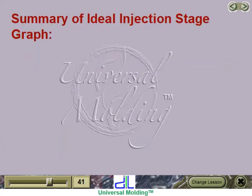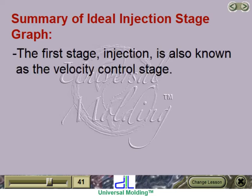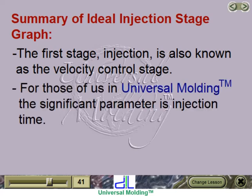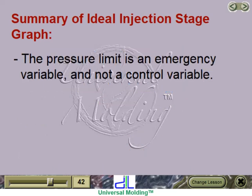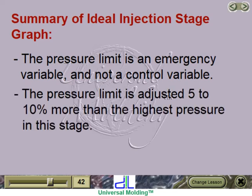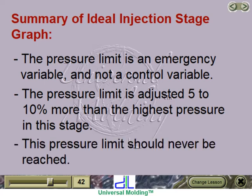Summary of ideal injection stage graph: The first stage — injection — is also known as the velocity control stage. For universal molding, the significant parameter is injection time. In this first stage, pressure is the result and not a control variable. The pressure limit is an emergency variable and not a control variable. The pressure limit is adjusted 5–10% more than the highest pressure in this stage, and this pressure limit should never be reached.